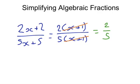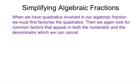Now when we're dealing with quadratic algebraic fractions, we do the same thing — we factorise first and then cancel any common factors. So if we have a quadratic involved, we must first factorise the quadratic before looking for common factors in both the numerator and the denominator. In order to do this, we're going to need to be able to factorise quadratics, which we shall review as we look through the following examples.